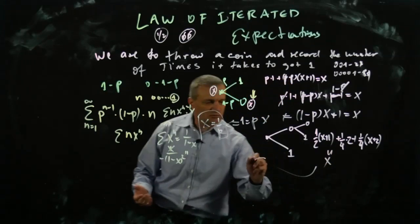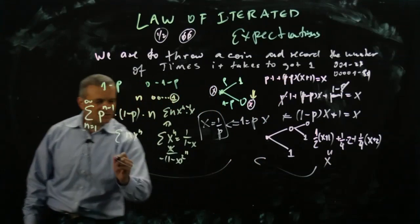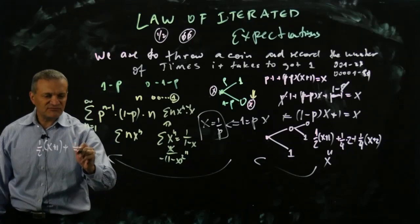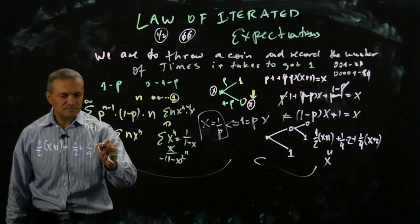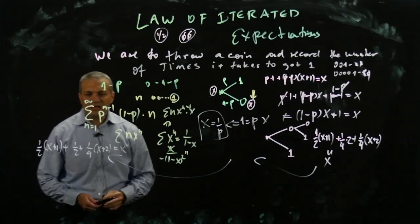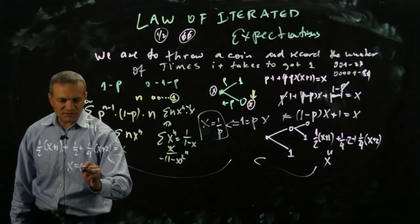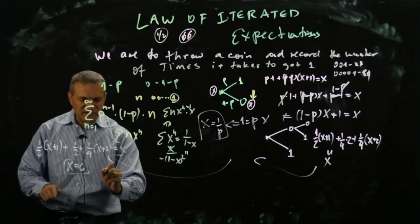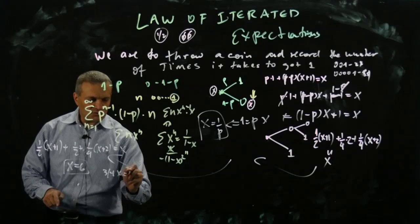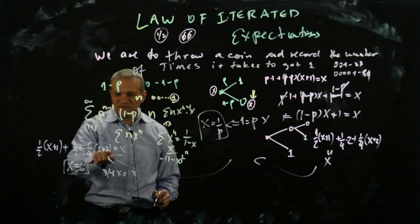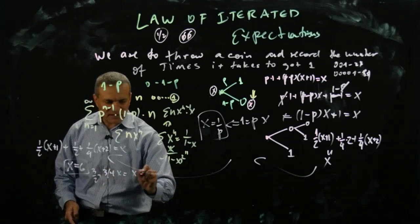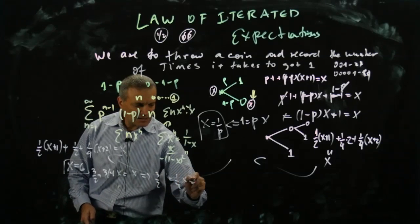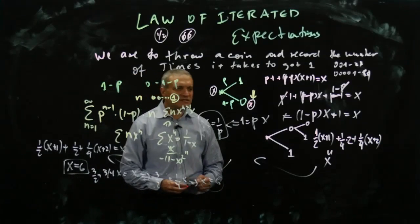If you get zero zero, you're done in two throws: that contributes one quarter times two. If you get zero then one, you must start over again — that contributes one quarter times (x plus two). The equation is: half(x + 1) + quarter times 2 + quarter times (x + 2) = x. Expanding: half x plus one half plus three quarters x... solving gives x equals six. On average it takes six throws to get two consecutive zeros.